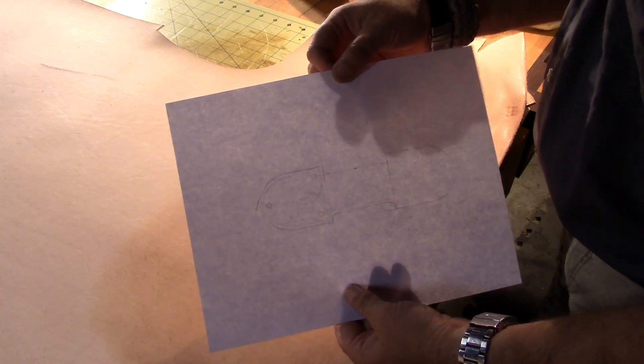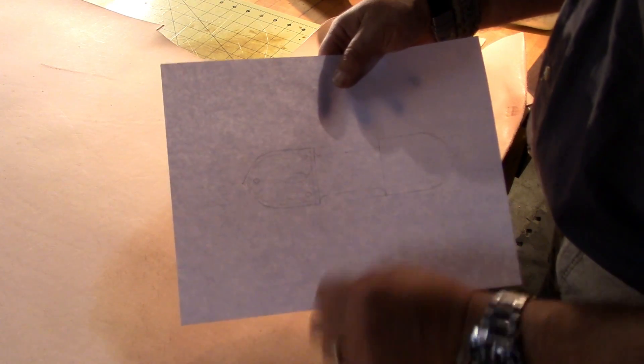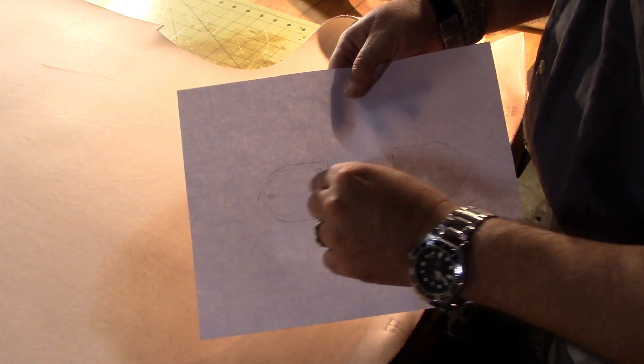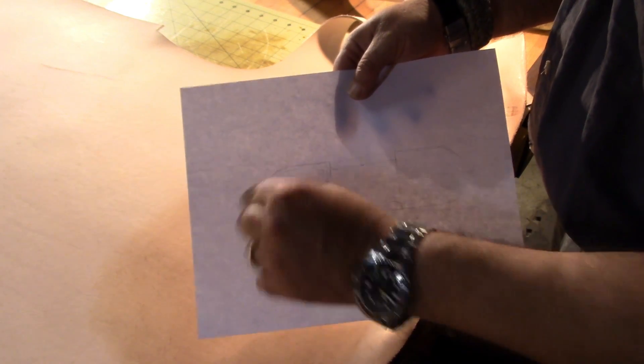Here you can see a little bit about what this pattern's going to look like. You can see what the stitching is going to look like, where the rivets are going to be. What I've done is I've taken and copied one of those, printed it out.